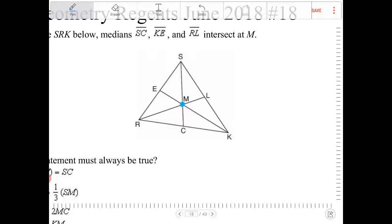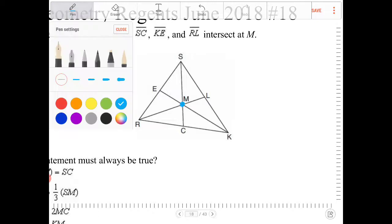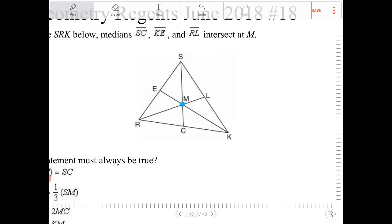And the significance of the centroid of the triangle is it actually partitions the triangle into six equal areas. So meaning the six triangles that you see here right now, all of the areas are going to be the same.